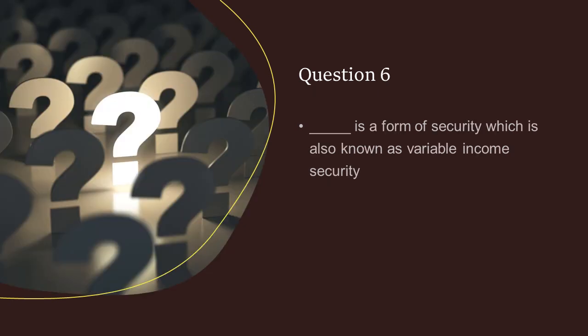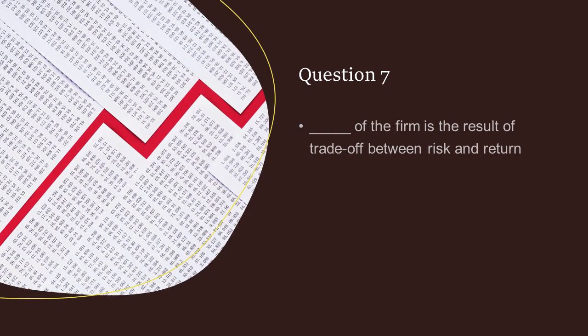Ordinary shares is a form of security which is also known as variable income security. The market value of a firm is the result of trade-off between risk and return.